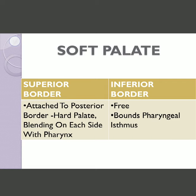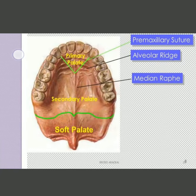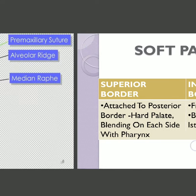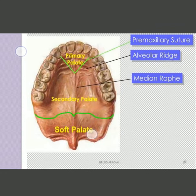The superior border gives attachment to the posterior border of the hard palate, blending on each side with the pharynx. The inferior border is free and it bounds the pharyngeal isthmus — specifically the oropharyngeal isthmus.